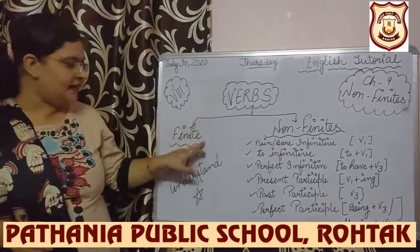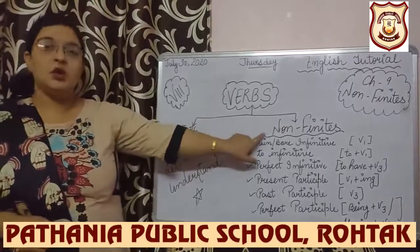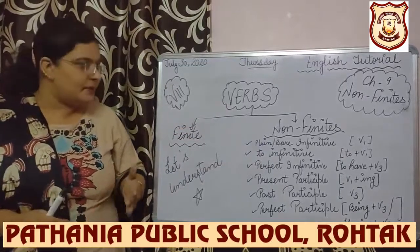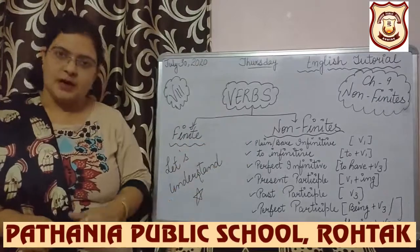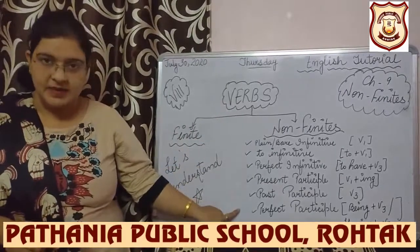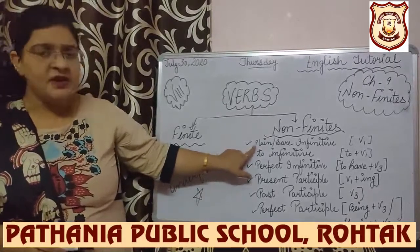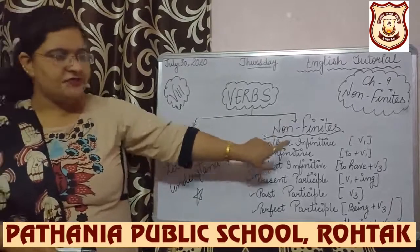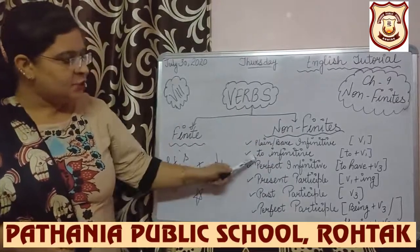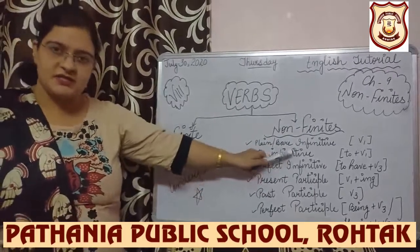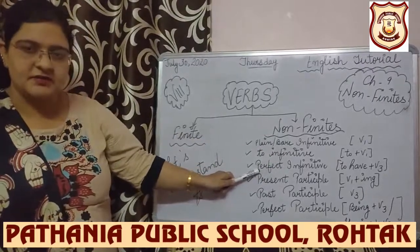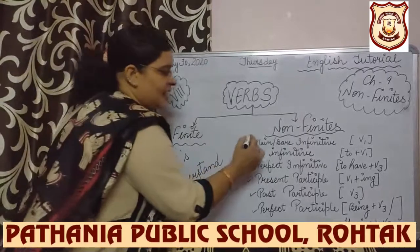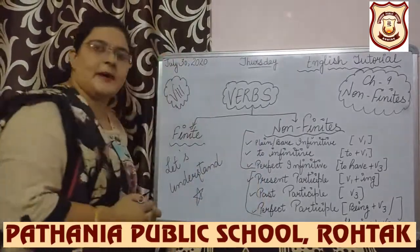These verb forms are divided into two parts: finite verb forms and non-finite. Non-finite verb forms do not have any sub-parts, but we need to understand about non-finites. These are the types and parts. The very first is plain or bare infinitive, which is the first form of the verb. Second is to-infinitive, which is 'to' plus first form. Third is perfect infinitive, which is 'to have' plus third form of the verb. These three are infinitives and these three are participles.